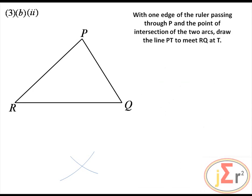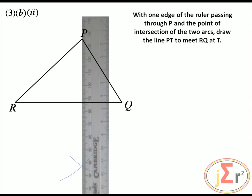With one edge of the ruler passing through P and the point of intersection of the two arcs, draw line PT to meet RQ at T. Although we have the frame of the kite, we only need to draw the line as required. Where that line meets line RQ is point T.